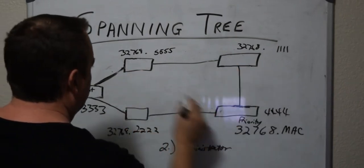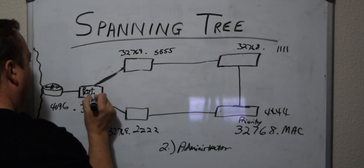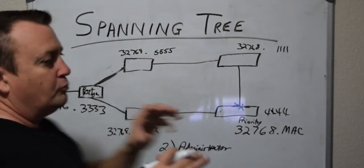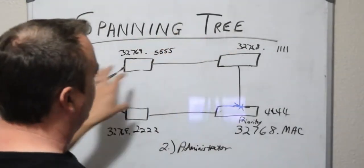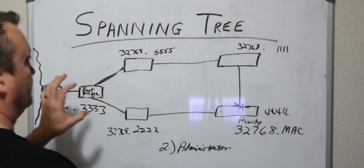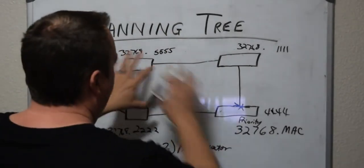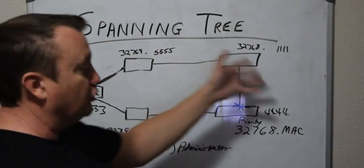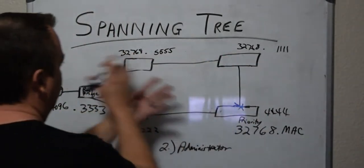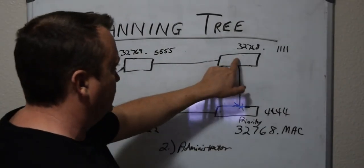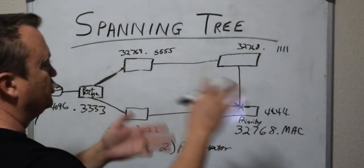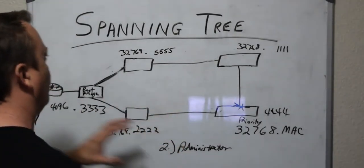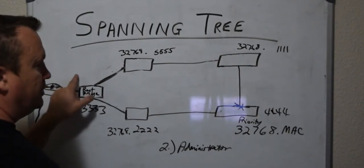If you wanted a specific switch to be the root switch, you would set its priority to 4,096. Then it doesn't matter what MAC addresses the others have — if they all have the default 32,768 priority, this switch will still have the lowest value and become the root switch. When it advertises out its priority of 4,096, all other switches will see it as the root bridge and determine the most efficient path back to it while blocking loops.